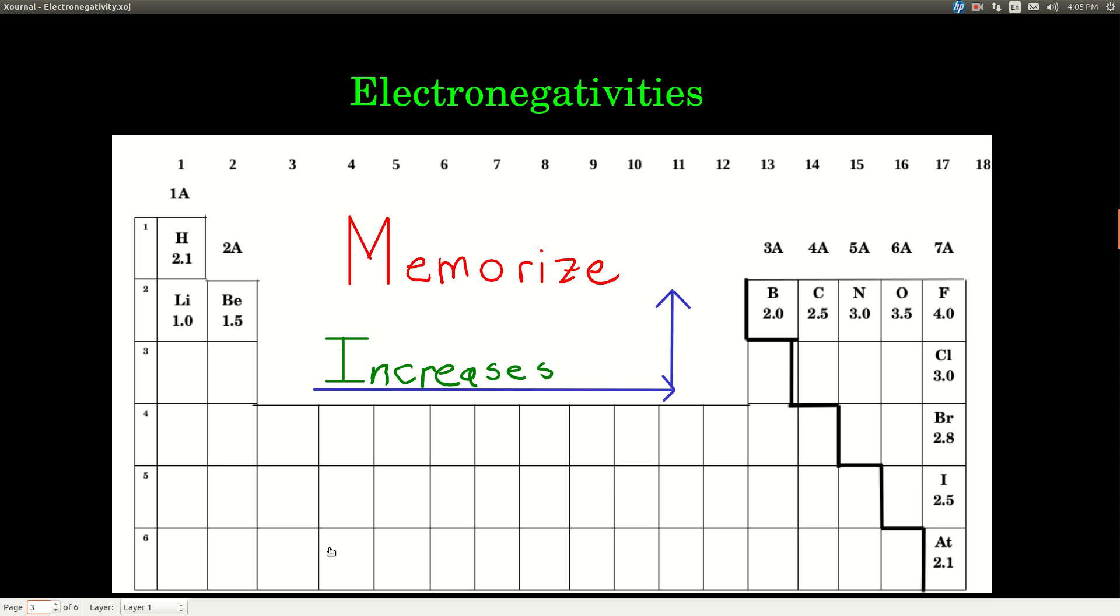Now, the electronegativity is just a number. It has no units. And pretty much every element you can look up an electronegativity for. These are the ones that I'm asking you to memorize. Hydrogen, all of the second row of the periodic table, and the halogens, none of the others. But there is a trend.